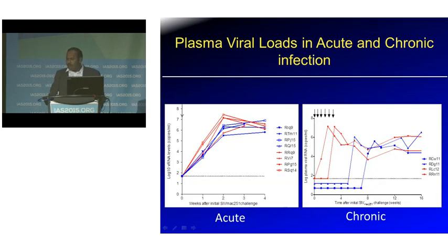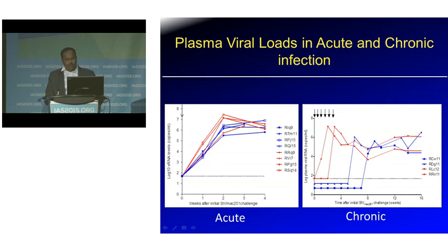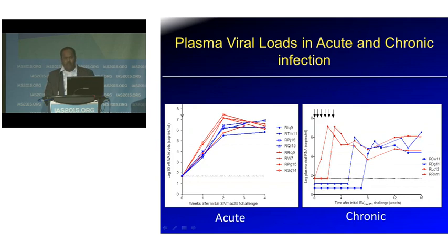Looking at plasma viral loads in both acute and chronic infection: red lines represent IgG-treated animals and green lines represent monkeys that received anti-alpha-4 beta-7. In the acute infection, there are small differences in plasma viral loads but they are not statistically significant. In the chronic phase with multiple low-dose challenges, there is a delay in infection, but once infected, there is no difference between the peak viral loads.